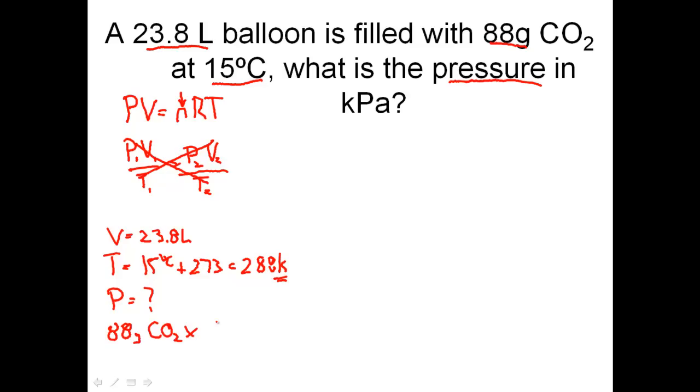Whenever you're given grams, convert it to moles. We're going to do the weight on the periodic table of CO2. Carbon weighs 12, oxygen weighs 16, and oxygen weighs 16. So one mole divided by 12 plus 16 plus 16 equals 44 grams. Let's do 88 times 1 divided by 44 grams to find out how many moles of CO2 I have. We have 2 moles of CO2.